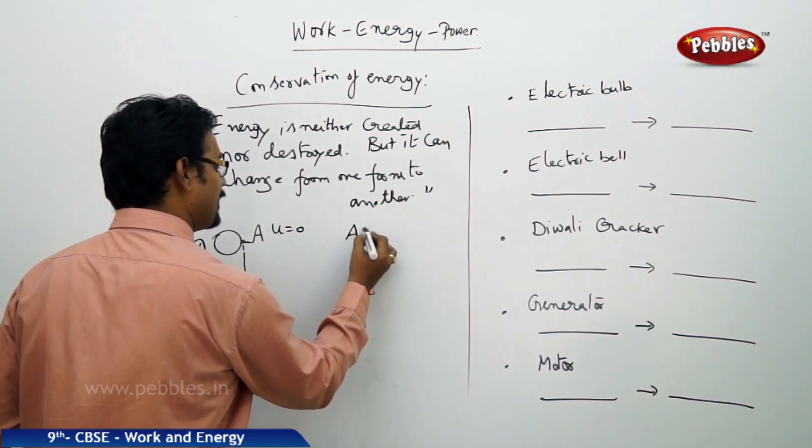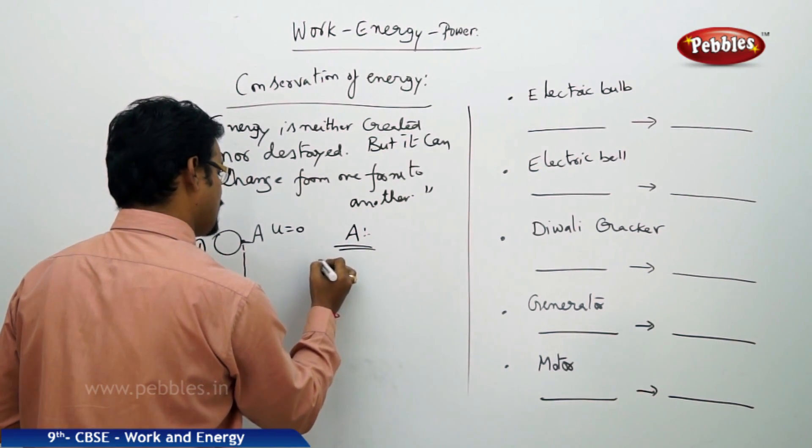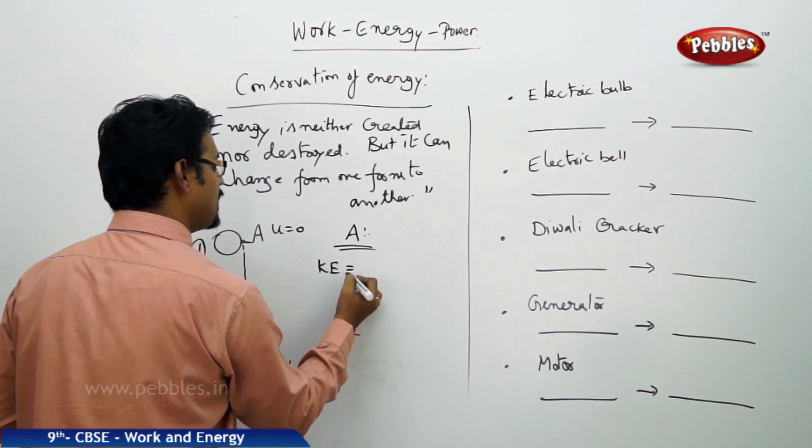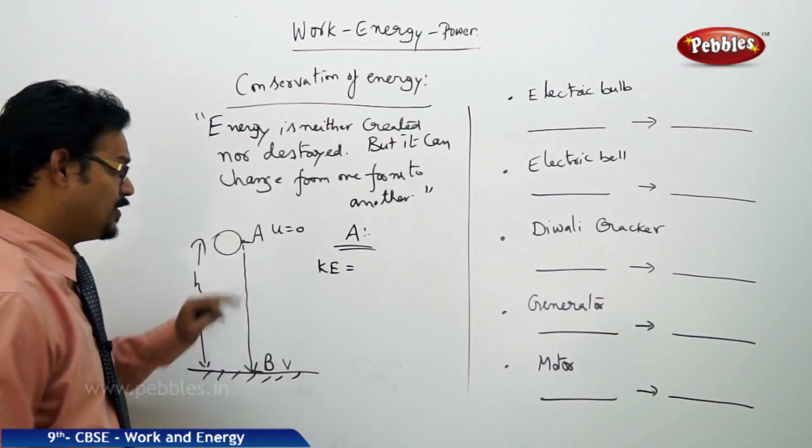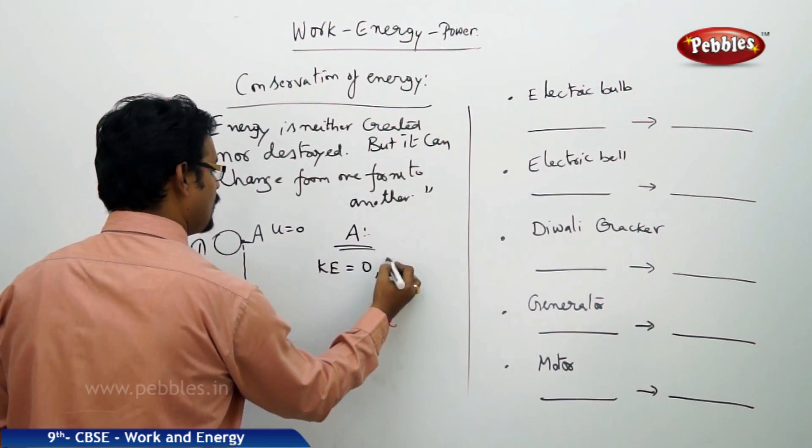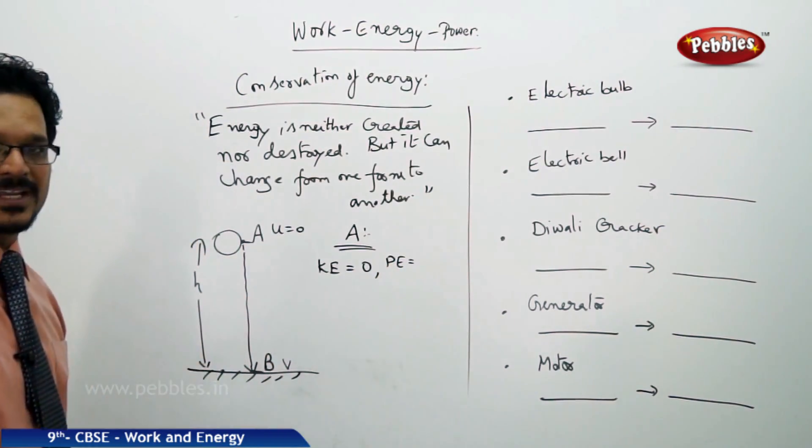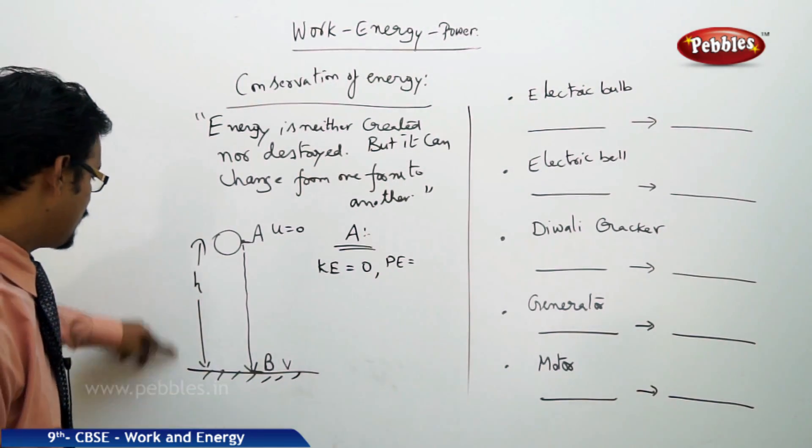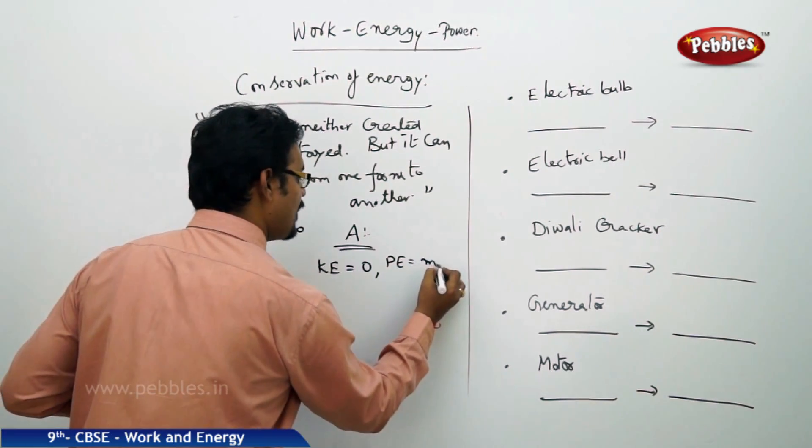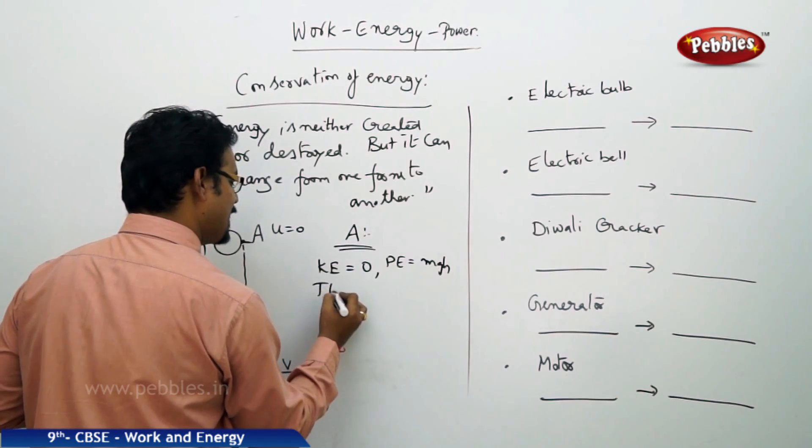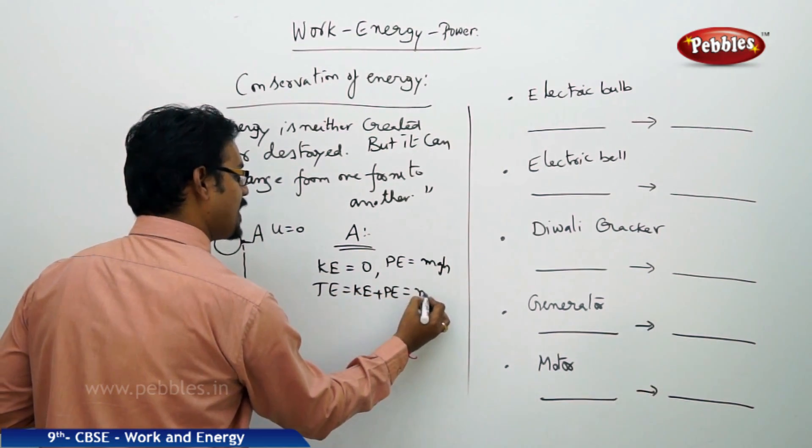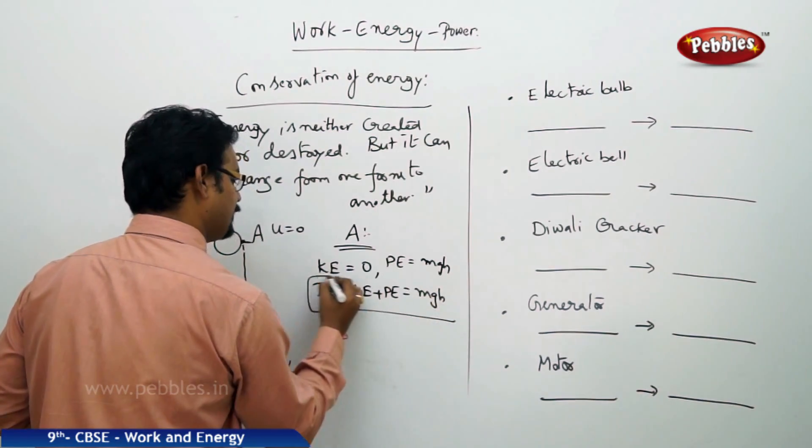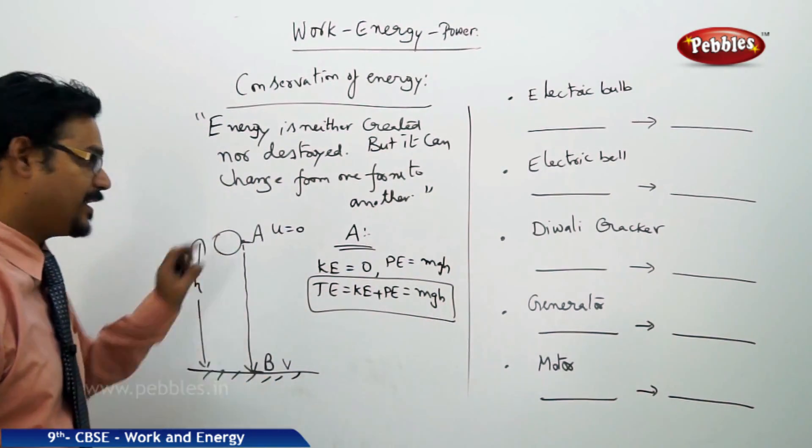At point A, what is the amount of energy the ball has? You should have the same amount of energy at point B also. Let me prove. So at point A, first take kinetic energy: KE = ½mV², but V or U is 0, so kinetic energy is 0. Now coming to potential energy, it is mgh, where H is the height from the ground. So total energy is KE + PE, which is mgh.